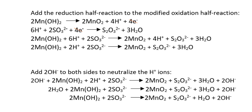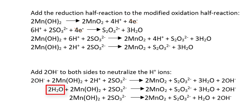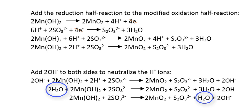We then add the two balanced half reactions. Because we are in basic conditions, we add two hydroxides to both sides to neutralize the two H⁺ on the left, forming two waters on the left and adding two hydroxides to the right. We simplify by canceling the two waters on the left, leaving one water on the right in the final balanced equation.